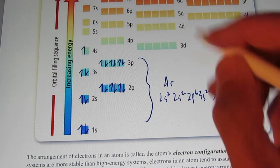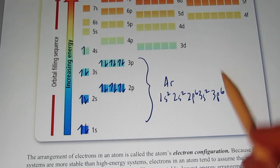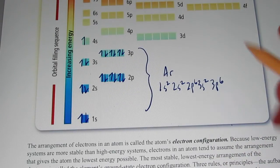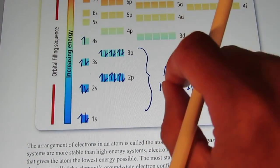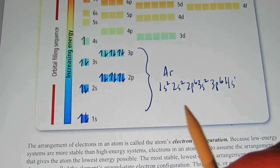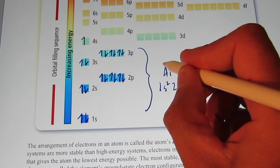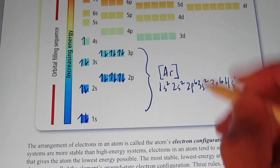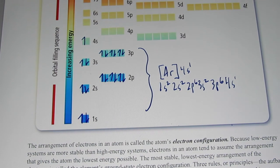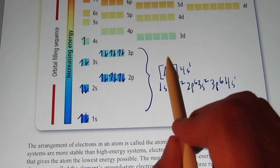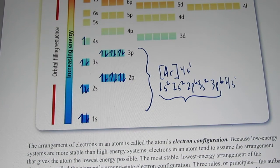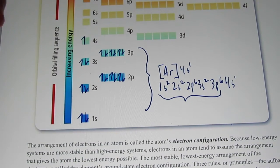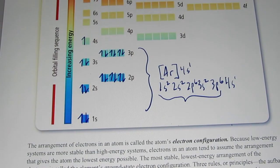So, the electron configuration for potassium with 19 electrons is just like argon's, but we add 4s1 to the end. A shorthand notation that helps us write this more easily is to write the noble gas before the element we're interested in. In this case, the noble gas before potassium is argon — we write that noble gas in brackets, and then write the end of the configuration. So instead of writing all of this, we write [Ar] 4s1. That will save us a lot of time, especially as we get to elements with longer and longer electron configurations.